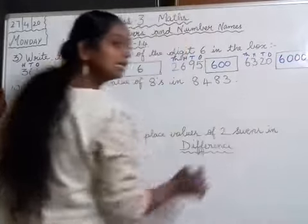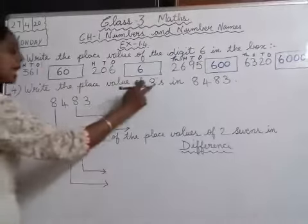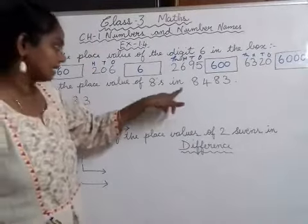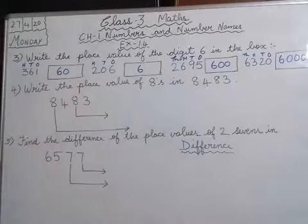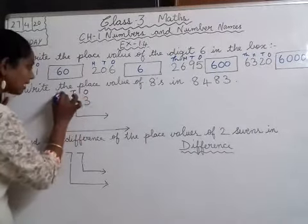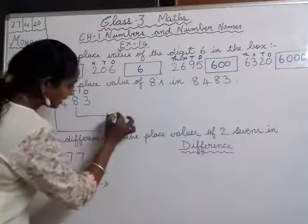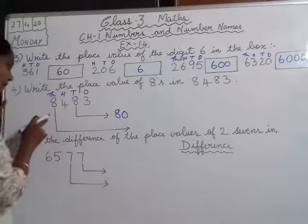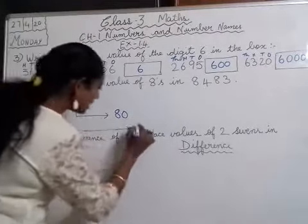6 with three zeros will be 6000. Question number 4 — write the place value of 8s in 8483. There are two 8s; we need to find the place value of each. Writing 8483 in ones, tens, hundreds, thousands: the first 8 is in tens place, so its place value is 80. The second 8 is in thousands place, so its place value is 8000.